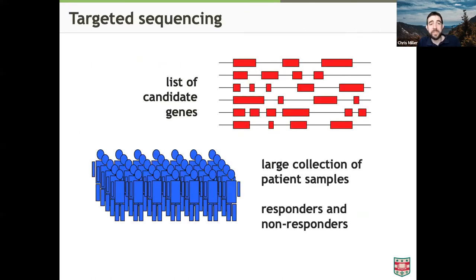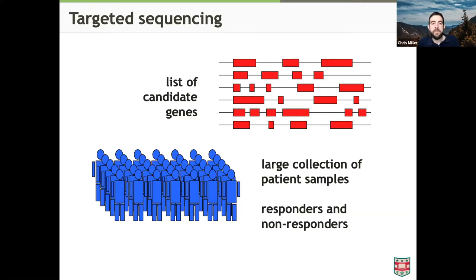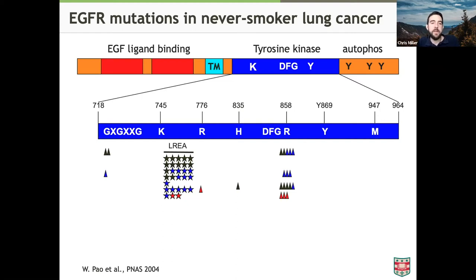What we're trying to do is change that. This started about 20 years ago when we could first sequence candidate gene lists. Though still fairly expensive, we could take five or ten genes thought important for a particular cancer type, sequence them in a large collection of patient samples — people who responded well and those who didn't respond well to certain therapies. For example, in never-smoker lung cancer, a 2004 paper sequenced EGFR, a growth factor receptor with an obvious connection to how mutations might induce cellular growth.